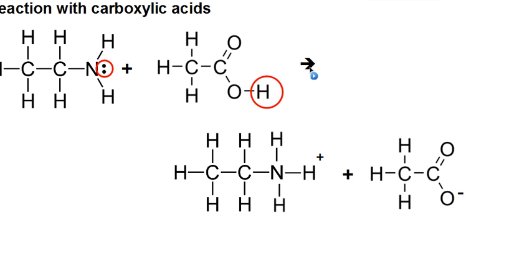So we end up with our NH3+ group again, and the carboxylic acid has lost its hydrogen and has a negative charge on its oxygen now. We end up with the hydrocarbon ammonium ion, so ethyl ammonium ion.